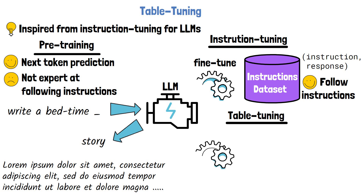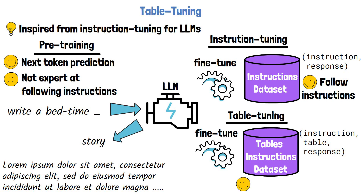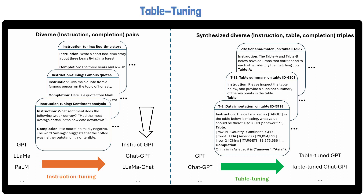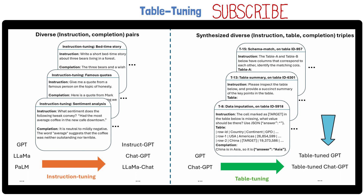For this reason, there is the instruction tuning step, where we fine-tune the model on an instructions dataset where each sample is a tuple of an instruction and a response used as the label. Table tuning is another step that can run either on the pre-trained LLM or the instruction-tuned LLM, where we fine-tune the model on a tables-instructions dataset. Each sample is a triplet of instruction, table, and response. On the right of a figure from the paper, we can see table tuning where base LLMs or instruction-tuned models like ChatGPT are further trained using these triplets to create a table-tuned version.